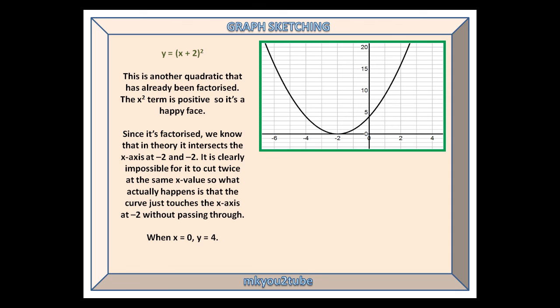Our fifth curve is y equals (x plus 2) squared. This is another quadratic that has already been factorised. The x-squared term is positive, so it is a happy face.